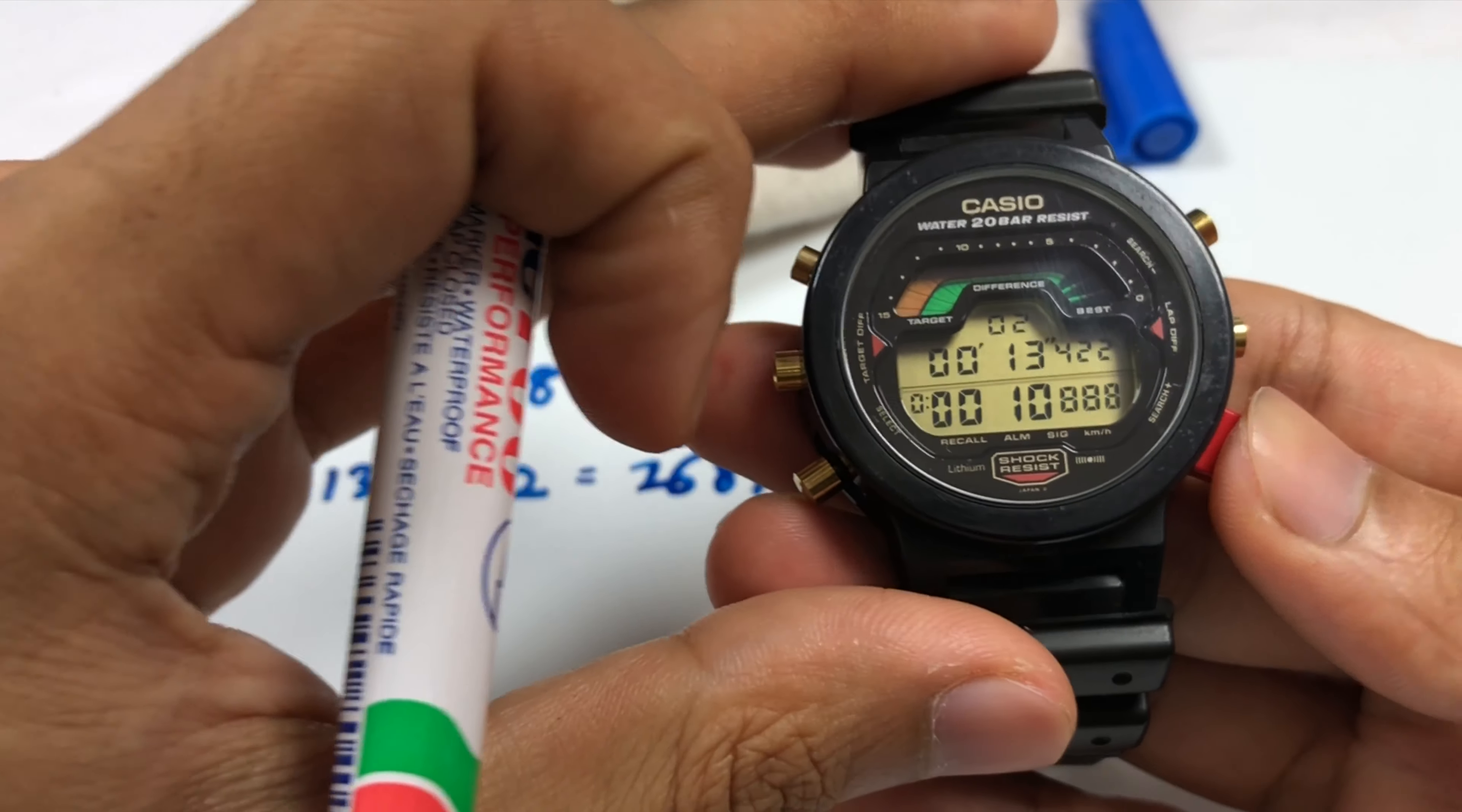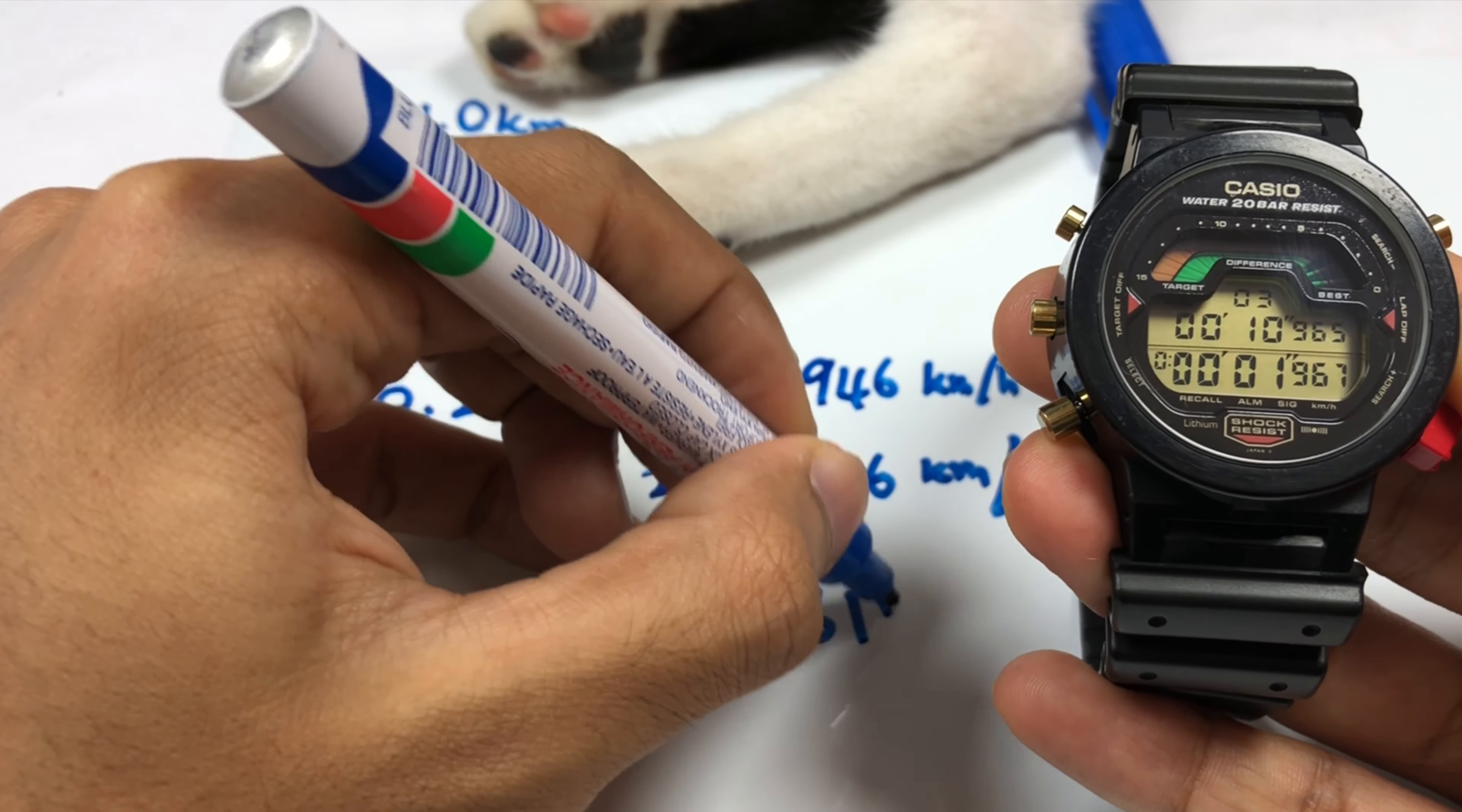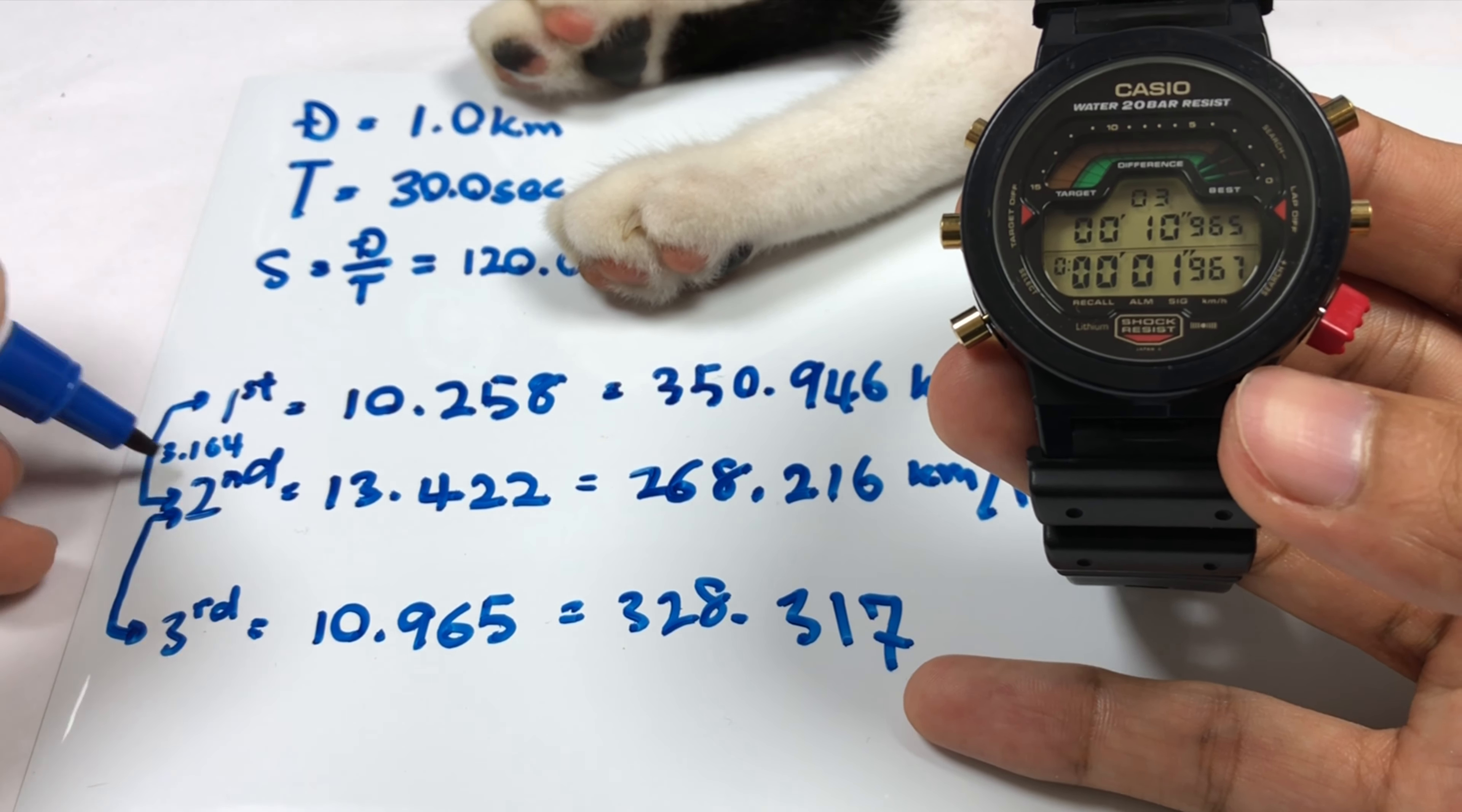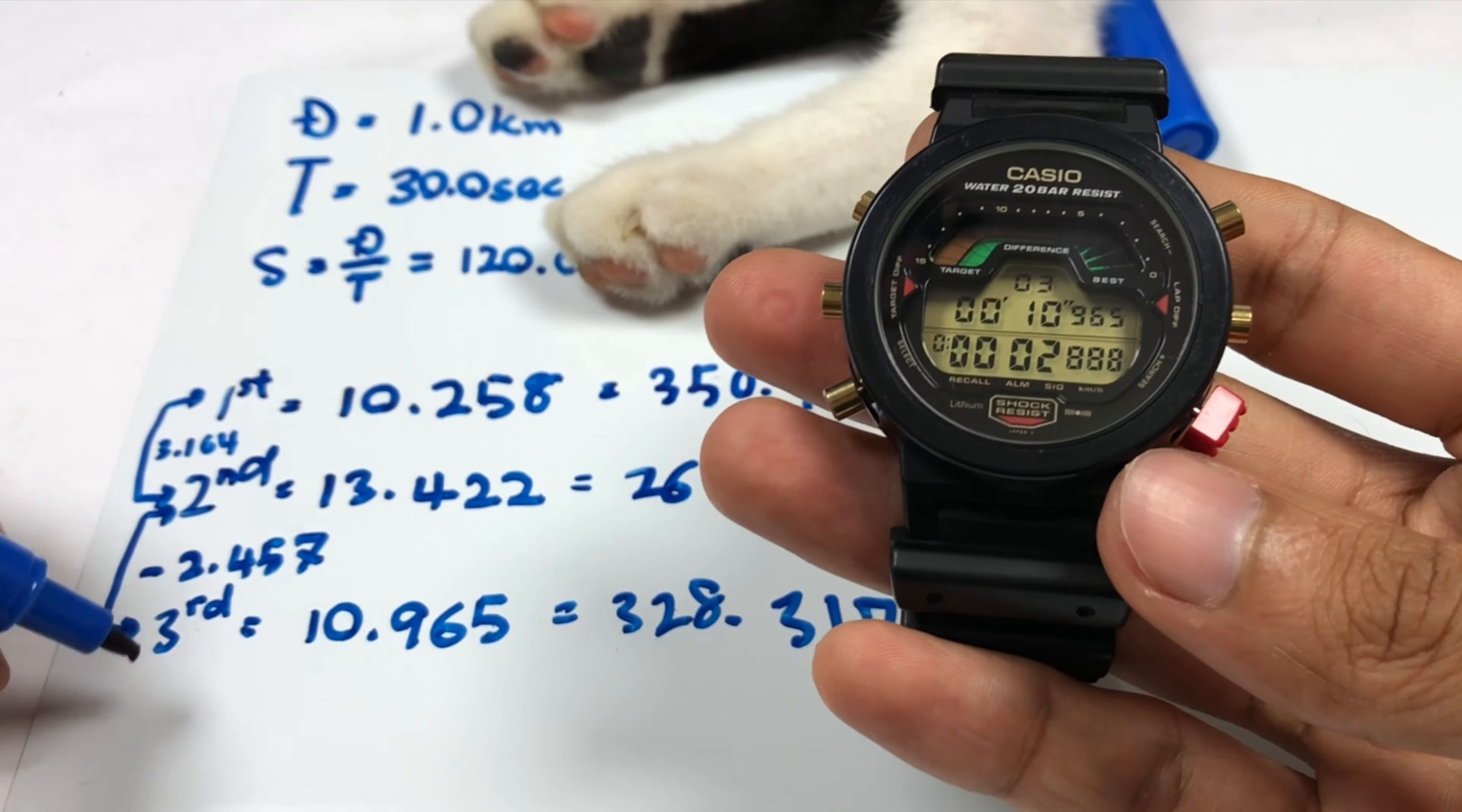Let's proceed to the next example. Our third lap is at 10.965 seconds. Our speed is 328.317 kilometers per hour. The time difference is negative 2.457 because this one is less than the previous one. The time difference between this time towards your target time is now 19.035 seconds.